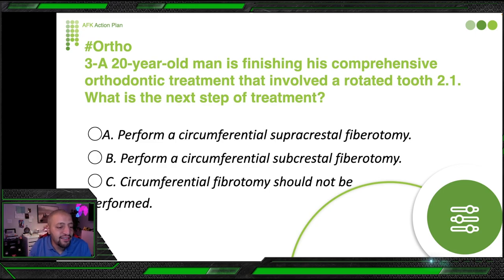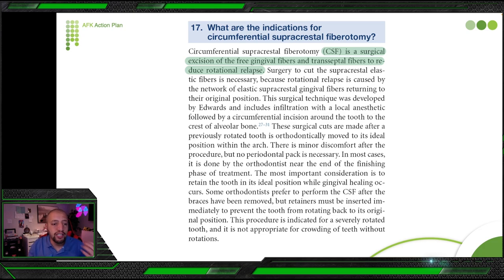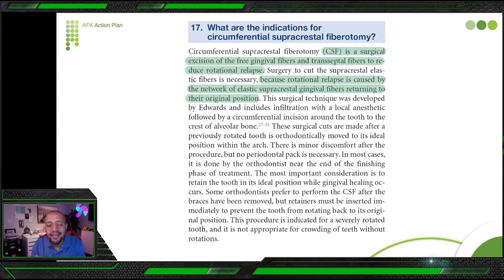The answer options include: perform a circumferential supracrestal fibrotomy, perform a circumferential subcrestal fibrotomy, or circumferential fibrotomy should not be performed. Circumferential supracrestal fibrotomy (CSF) is the surgical excision of the free gingival fibers and transeptal fibers to reduce rotational relapse. This surgery cuts the fibers around the tooth because rotational relapse is caused by the network of elastic supracrestal fibers pulling the tooth back to its original position.